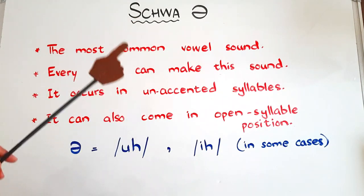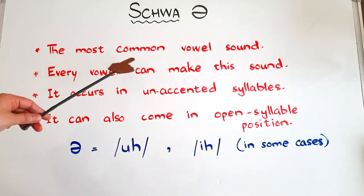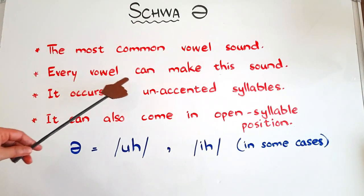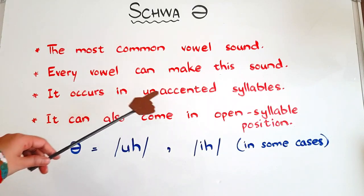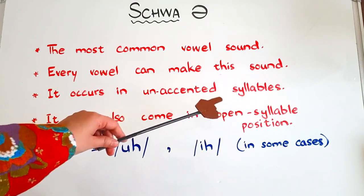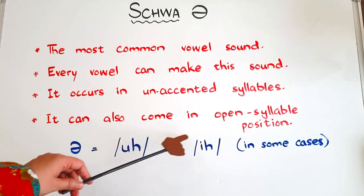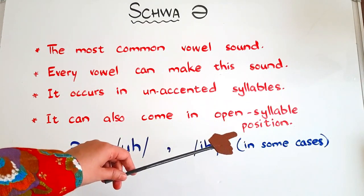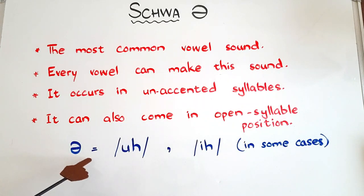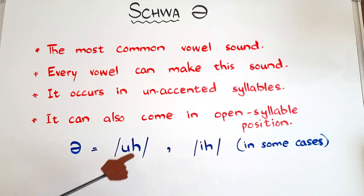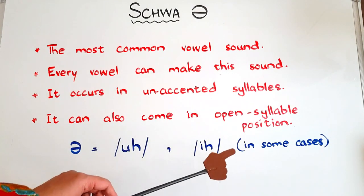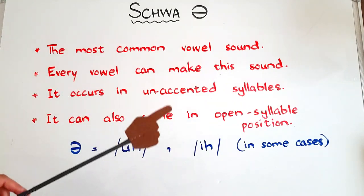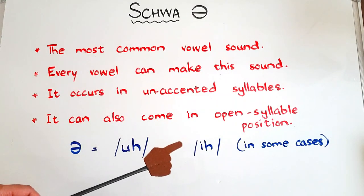What is schwa? Schwa is the most common vowel sound. Every vowel can make this sound. It occurs in unaccented syllables. It can also come in open syllable position. The sound is a short, relaxed 'uh' sound. In some cases, it may also sound like 'a'. If you want me to explain all these points, stay with me till the end of the video.